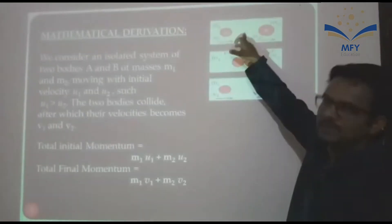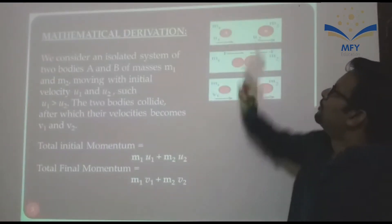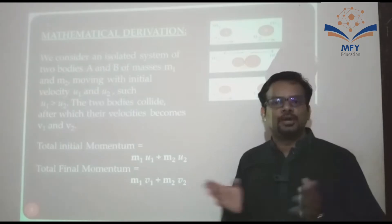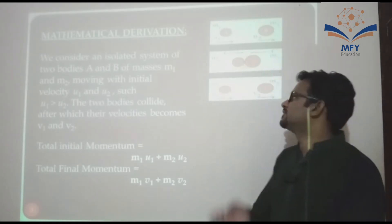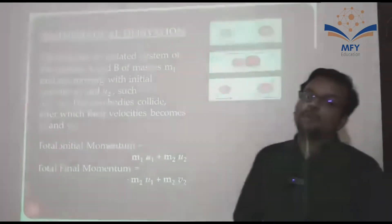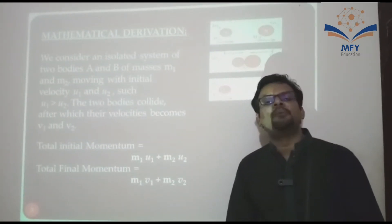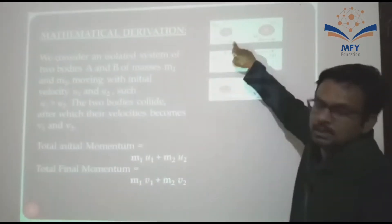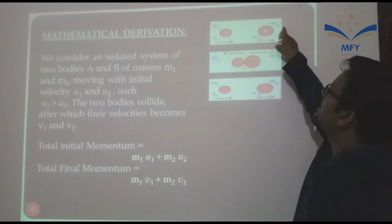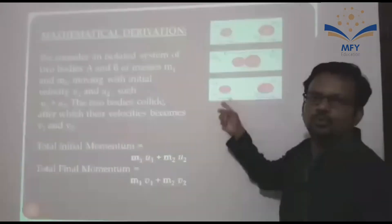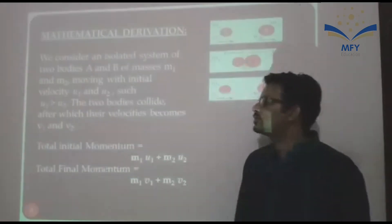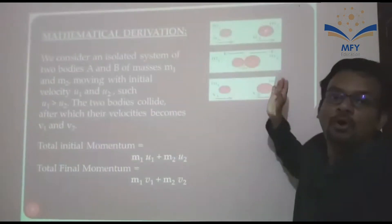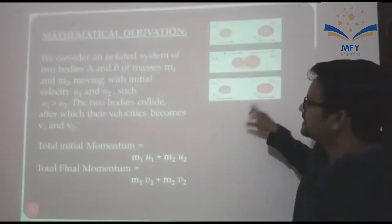We consider two bodies A and B of mass M1 and M2. Body A is moving with velocity U1 and B with velocity U2. After collision, body A is moving with velocity V1 and B with velocity V2. Total initial momentum M1U1 plus M2U2. Total final momentum M1V1 plus M2V2.